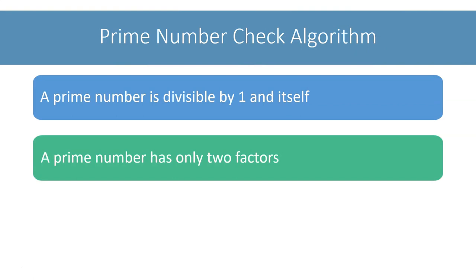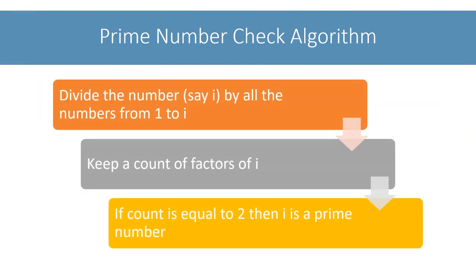To check if i is prime or not, I will follow these steps: I will divide i by all the numbers from 1 to i and keep a count of the factors. If the count is 2, then i is prime. Let me show this through an example.